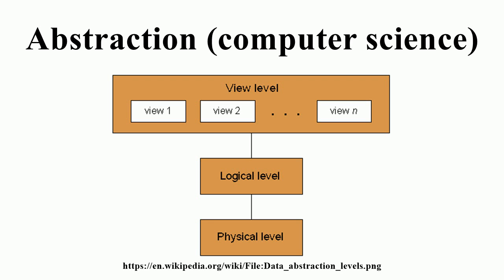Abstraction in Object-Oriented Programming. In Object-Oriented Programming Theory, abstraction involves the facility to define objects that represent abstract actors that can perform work, report on and change their state,